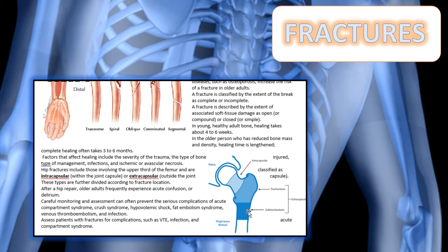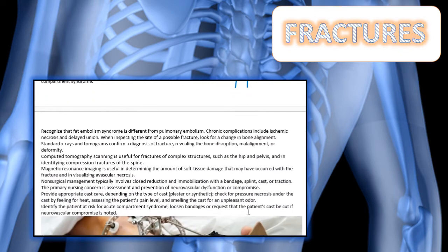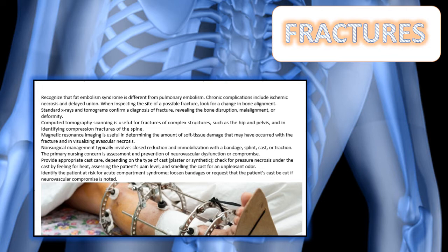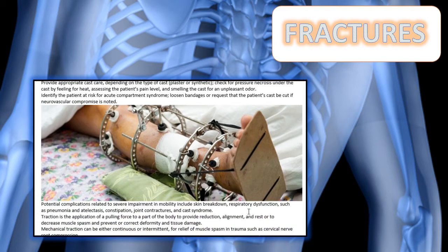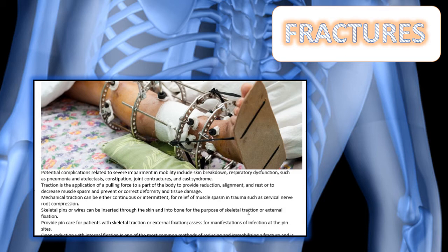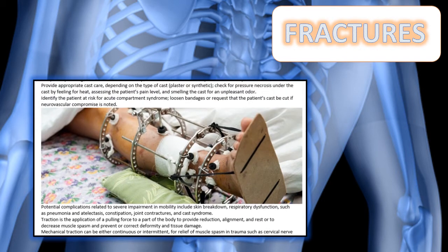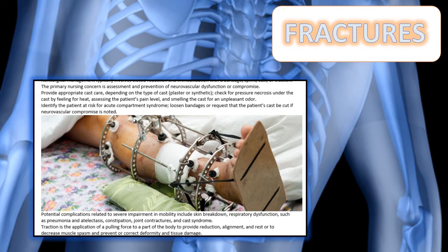After hip repair, older adults frequently experience confusion or delirium, so you want to carefully monitor these patients. You want to assess patients with fractures for complications such as VTE, infection, and compartment syndrome. Recognize that fat embolism is different from pulmonary embolism, but chronic complications may include ischemic necrosis and delayed union. There is more detail about fractures, pin sites, and pin care covered in your notes that you should review.